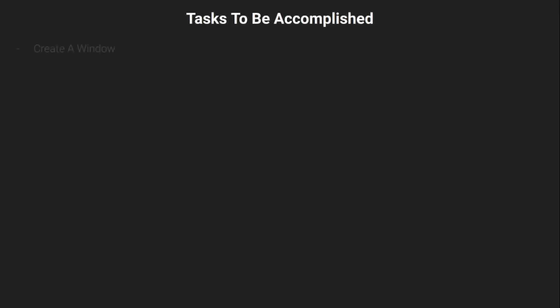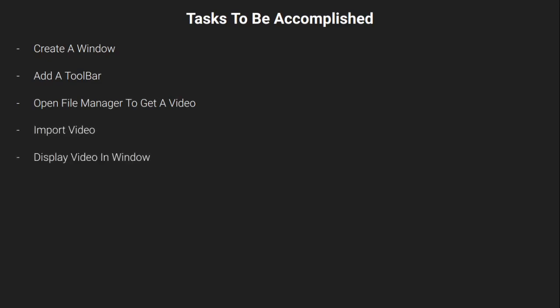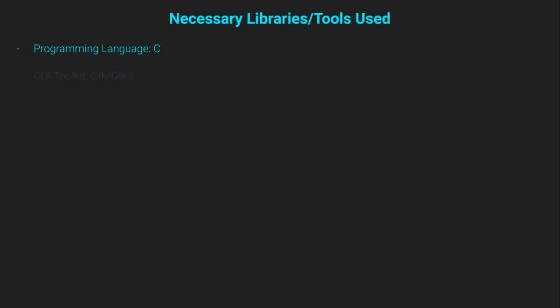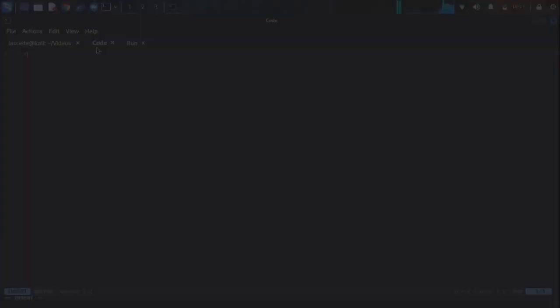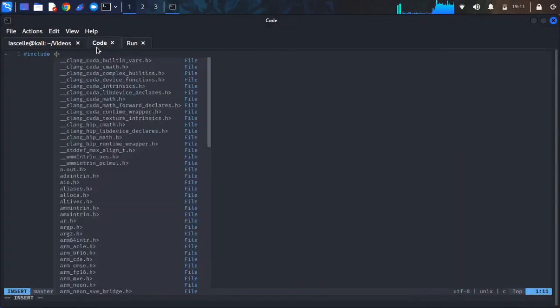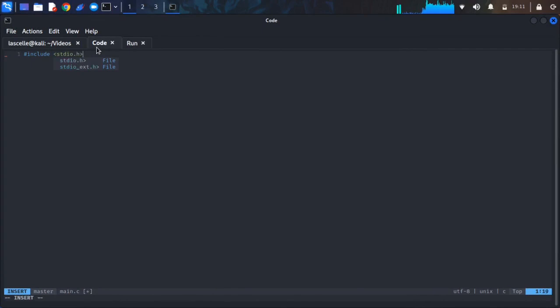The first set of tasks to be completed for this project is to create a window, add a toolbar, open the file manager to get a video, import the video, and display the video in the window. The necessary tools that will be used are the programming language C, GTK for the GUI toolkit, FFmpeg, and GStreamer. We will now include our libraries.